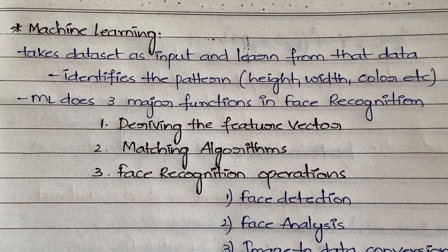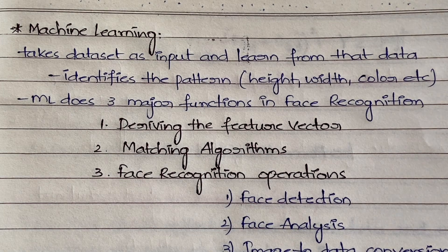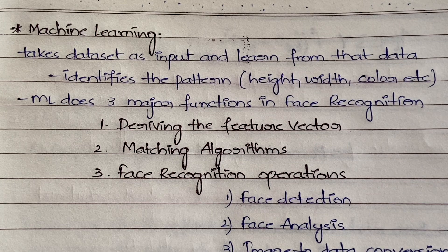In machine learning there are three major functions performed in face recognition. Number one is deriving the feature vector — based on the features related to the face, it derives a vector (something with both magnitude and direction) to draw a conclusion. Number two is matching algorithms, which match the already stored data against the data currently being provided.